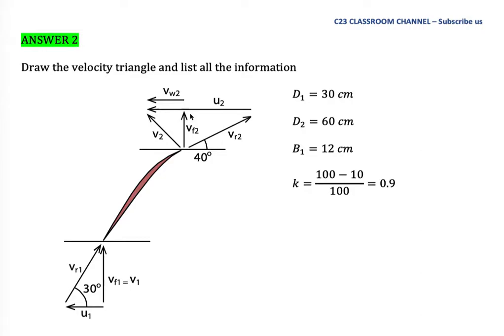We need to draw the velocity triangles correctly — one at inlet and one at outlet. Because Vw1 equals zero, the inlet velocity triangle simplifies so that Vf1 equals V1. At the outlet, the velocity triangle shows absolute velocity V2, relative velocity Vr2, tangential velocity U2, flow velocity Vf2, and whirl velocity Vw2.